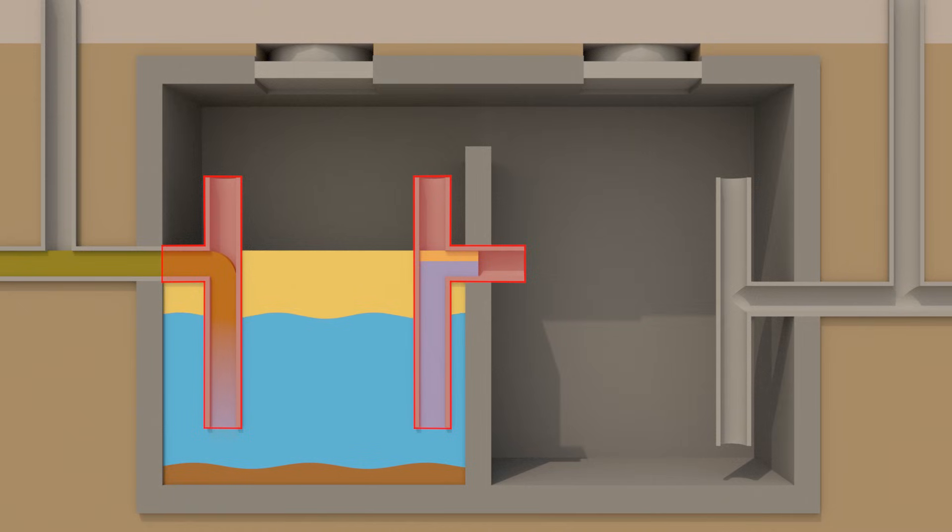The inlet T and transfer T slow down the flow, allowing the water to cool, which increases separation and solidifies the FOG, making later removal easier.